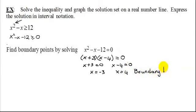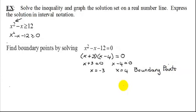Boundary points are points at which the original inequality can change from a true to a false statement. Once we have the boundary points, what we need to do is we need to plot them on the number line.